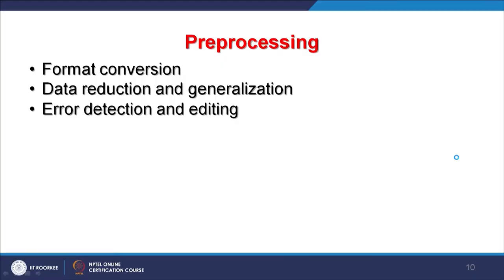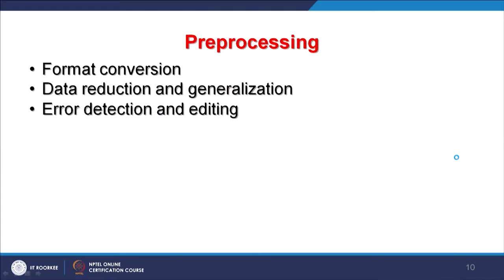Next preprocessing steps include data reduction and generalization, where redundancy checks or generalization are performed without deleting the original data. Error detection and editing are also important — after each step, check for errors, and if found, correct them before proceeding. For example, if digitization produces improperly constructed topology, check for errors, construct the topology properly, and then move to the next step.